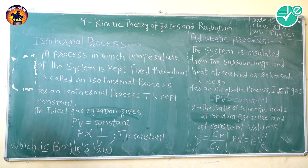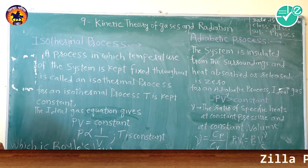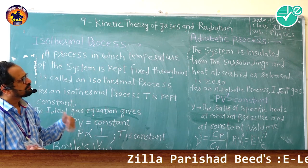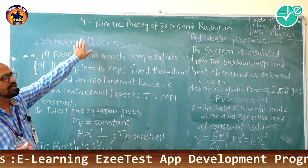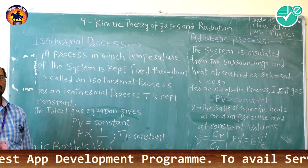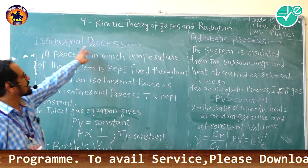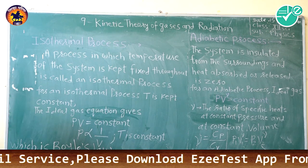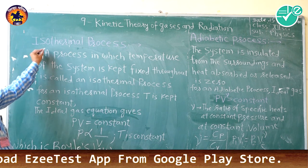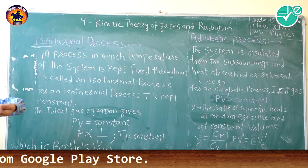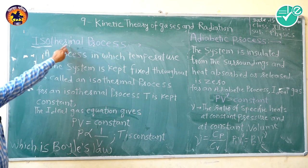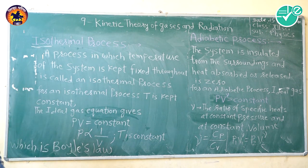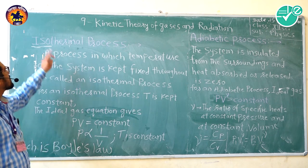After understanding the first law of thermodynamics, there are two processes which are important and used in further education also. If you understand these processes, then you can know what is happening in the next articles. The first is the isothermal process. With the name you can understand that 'iso' means same and 'thermal' means heat energy. So a process in which the temperature will be the same throughout the process is called an isothermal process.